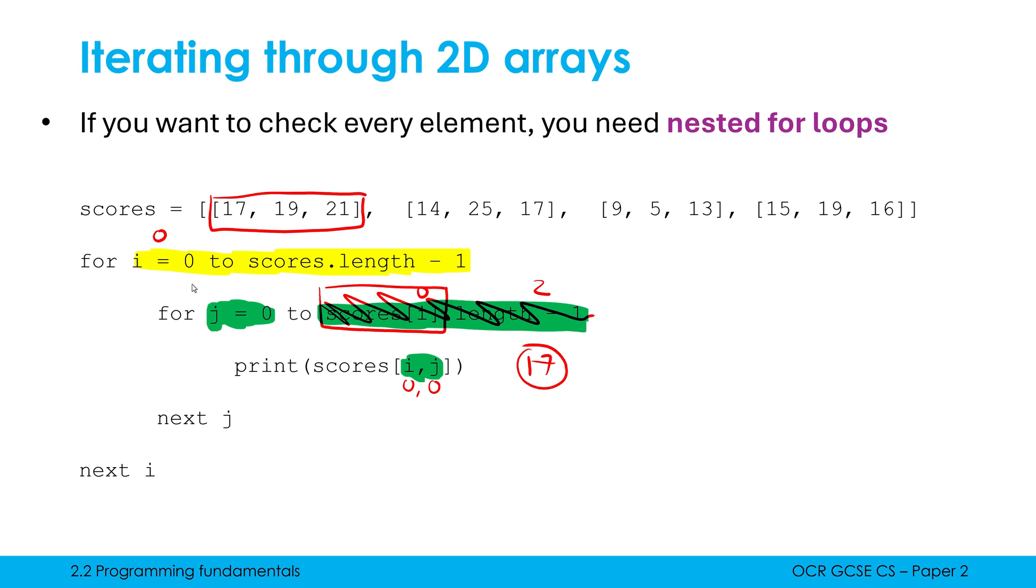j will now become 1. The length still stays the same, but I'm going to now be printing scores index 0 because i hasn't changed, comma 1. Scores index 0 comma 1 is going to give us 19 this time. j then increments so j is now going to be 2. The length hasn't changed. We're now going to print 0 comma 2 which is going to give us 21. And now because this bit here said that we're going up to 2 and including 2, because j is now effectively 3, we now leave this inner for loop and we go back round to the next i.